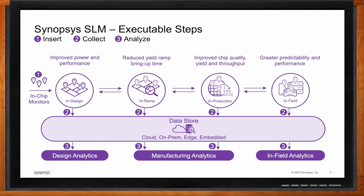The third step is analyzing that data. Traditionally, each lifecycle phase has its own set of analytics associated with it, and depending on where you are in the lifecycle, you'll be looking to do different things and solve different problems. Then lastly, it's the ability to act on whatever you find — issues that may be in the manufacturing supply chain that need to be corrected, or issues that go all the way back into the design that have to be corrected. There could be any number of actions necessary in this SLM flow.